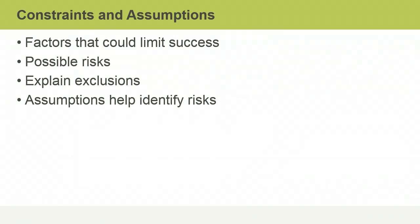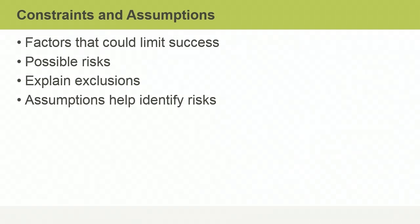A final component that's important to define in the scope statement is project assumptions. These help identify possible risks if the assumptions prove to be incorrect. In summary, the project scope statement should include a product scope description, product acceptance criteria, and details of a project's deliverables, exclusions, constraints, and assumptions.